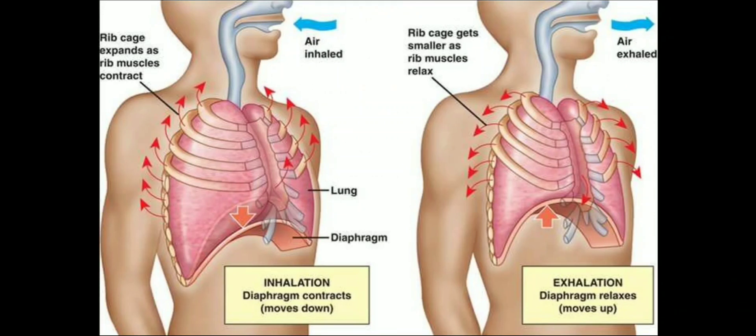Whereas in exhalation, the air is drawn out or exhaled out of the lung. The way inhalation works is the diaphragm moves down, causing a low pressure zone to be created inside the lung. It is due to this low pressure zone that the air is drawn inside the lungs.